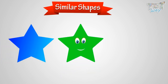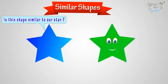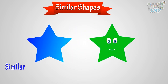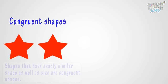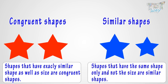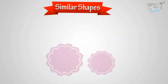Now, is this shape similar to our star? It has the same shape, so it's similar. Also, it has the same size too, so it's congruent too. That is, this shape is similar as well as congruent to our star. So kids, shapes that have exactly the same shape as well as size are congruent shapes. And shapes that have the same shape only, and not the same size, are similar shapes.